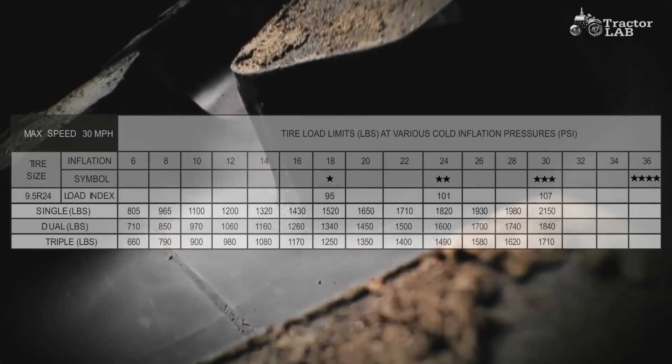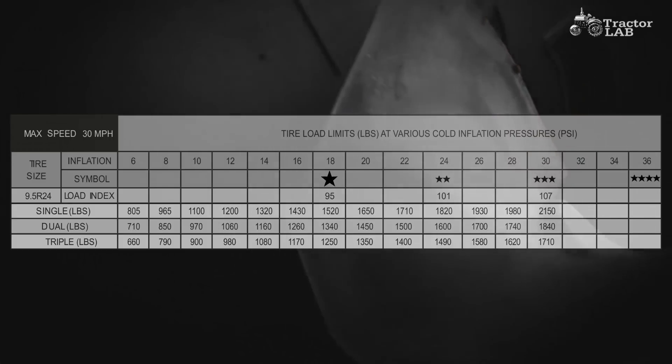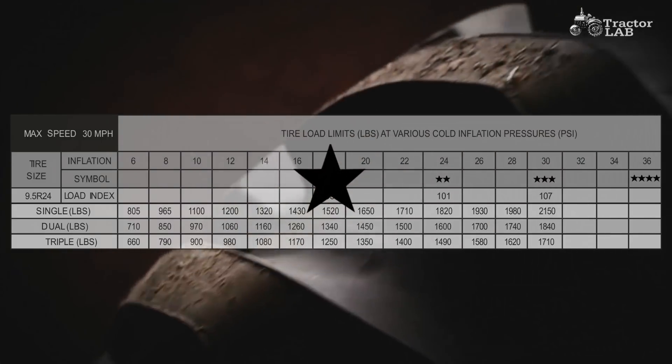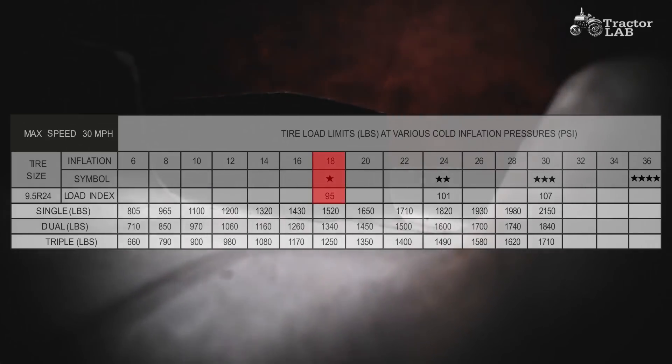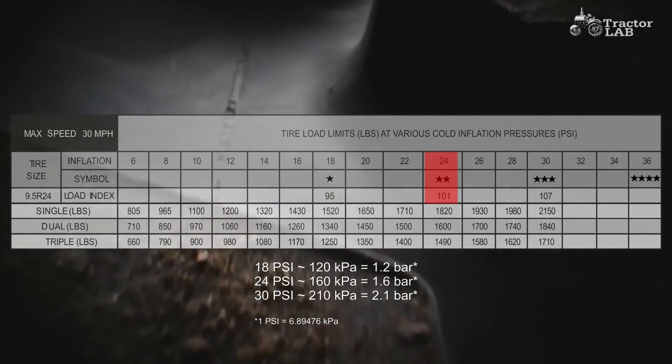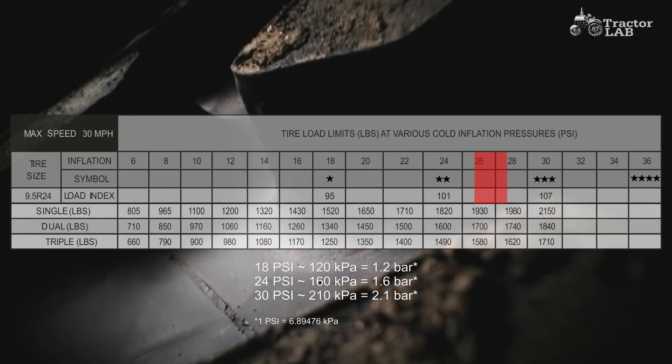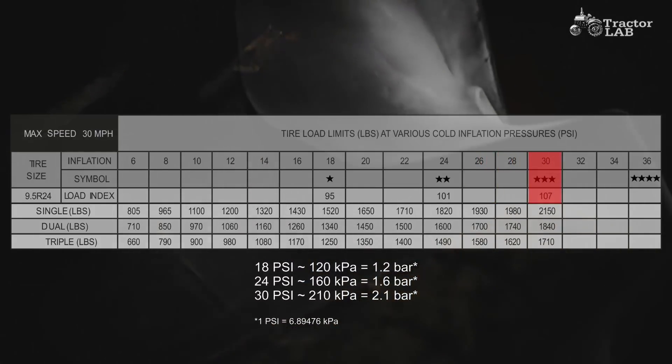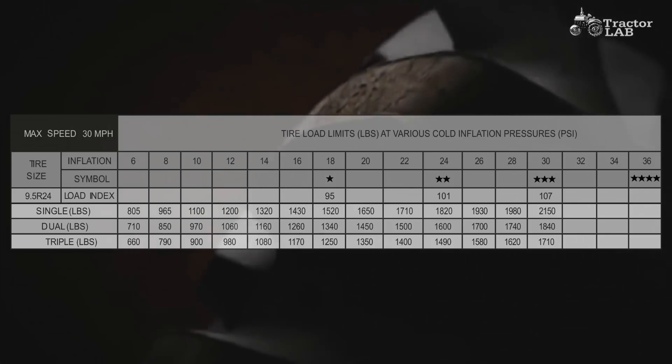Star marking used by conventional sized farm tractor radials. Star marking is an indication of rated inflation pressure. One star farm tractor tires are rated at 18 psi, two star farm tractor tires are rated at 24 psi, and three star farm tractor tires are rated at 30 psi. Loads vary with tire size.